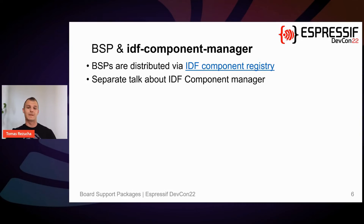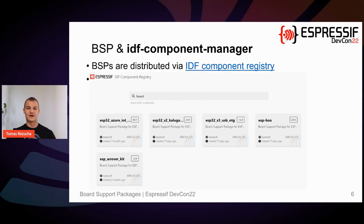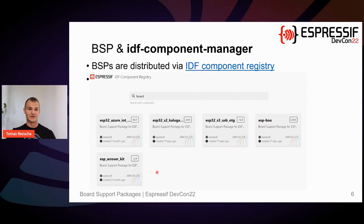Apart from integration in the IDF build system, the IDF registry also offers a nice web user interface where you can browse all IDF components including BSPs. For example, in this picture, if I search for the word 'board' in the IDF component registry, it will show me a list of relevant components — that is, BSPs for the Azure IoT Kit, the ESP Azure Kit, or the Kaluga kit that we are working with today.